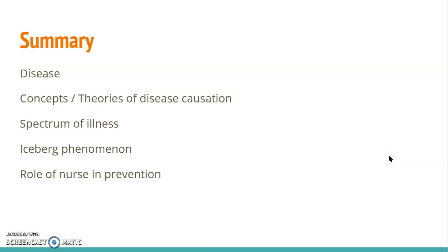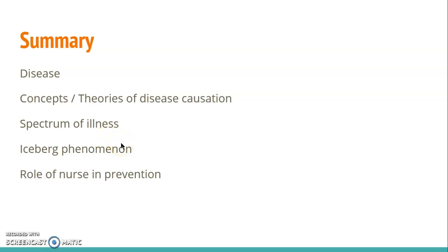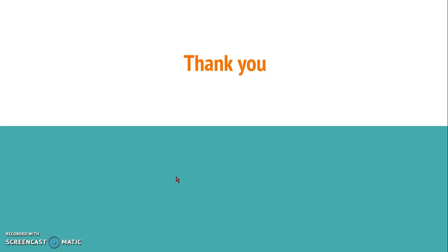In summary, we have seen the definition of disease, different concepts and theories of disease causation, the spectrum of illness, how a person lies within the spectrum, the iceberg phenomenon, and the role of the nurse in prevention of disease. Thank you.